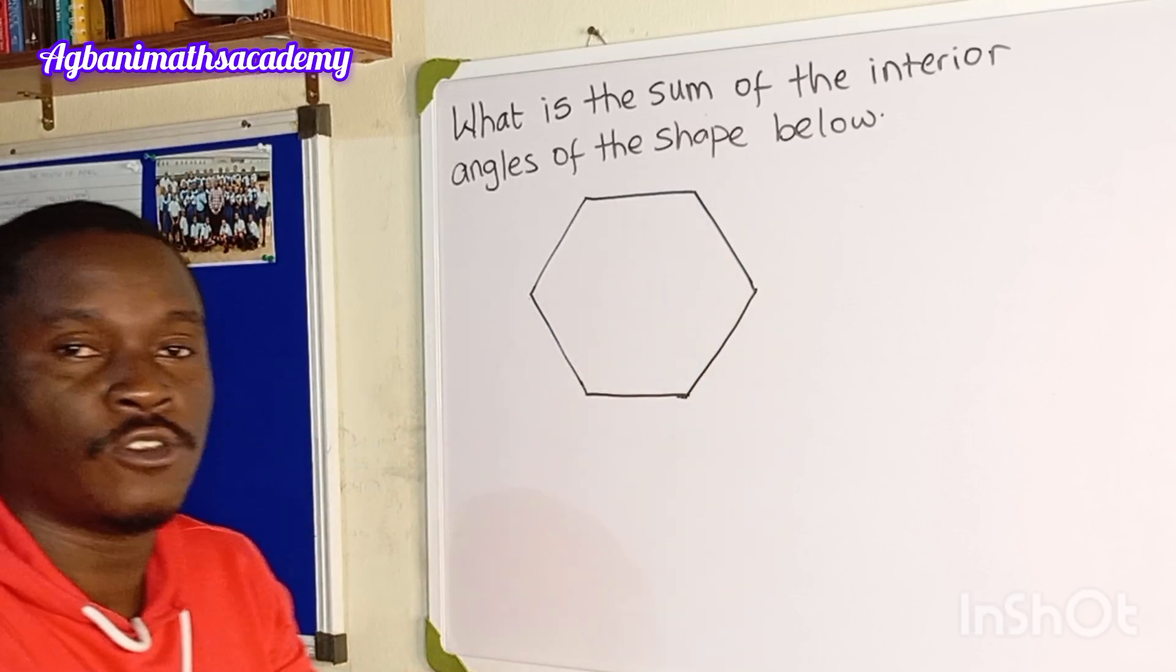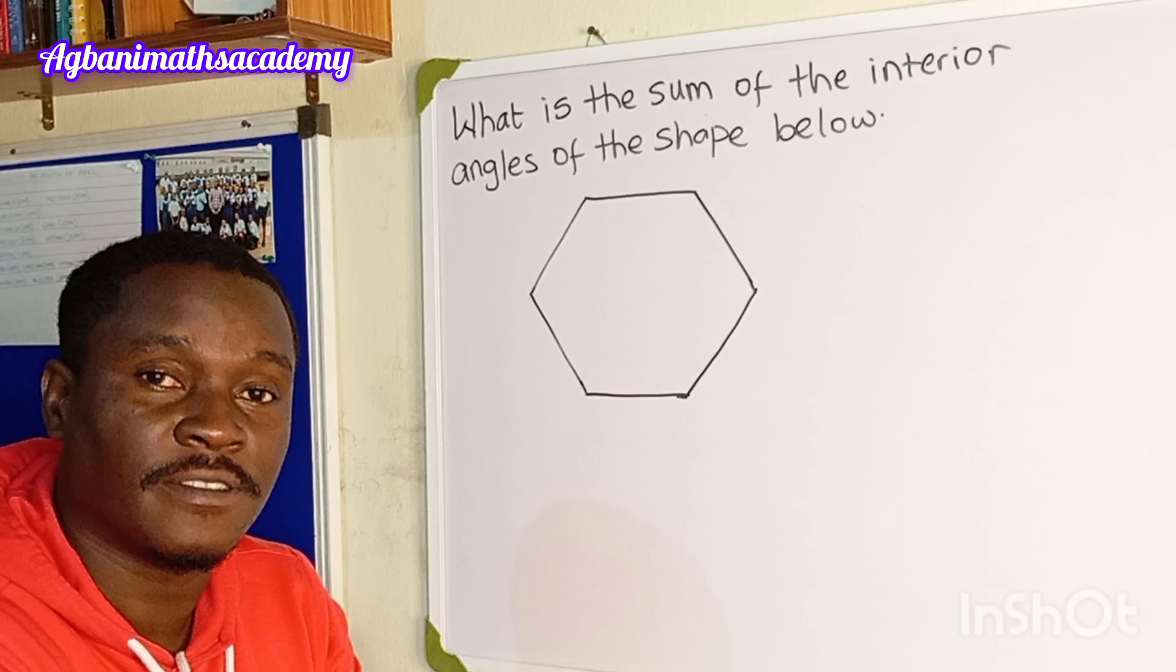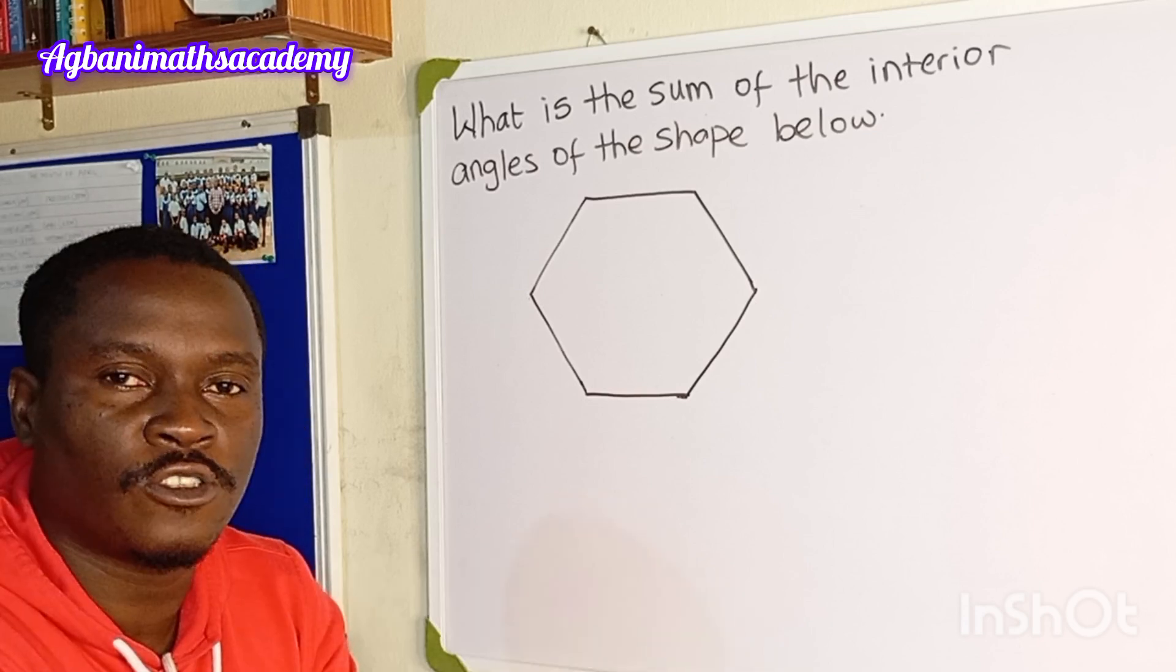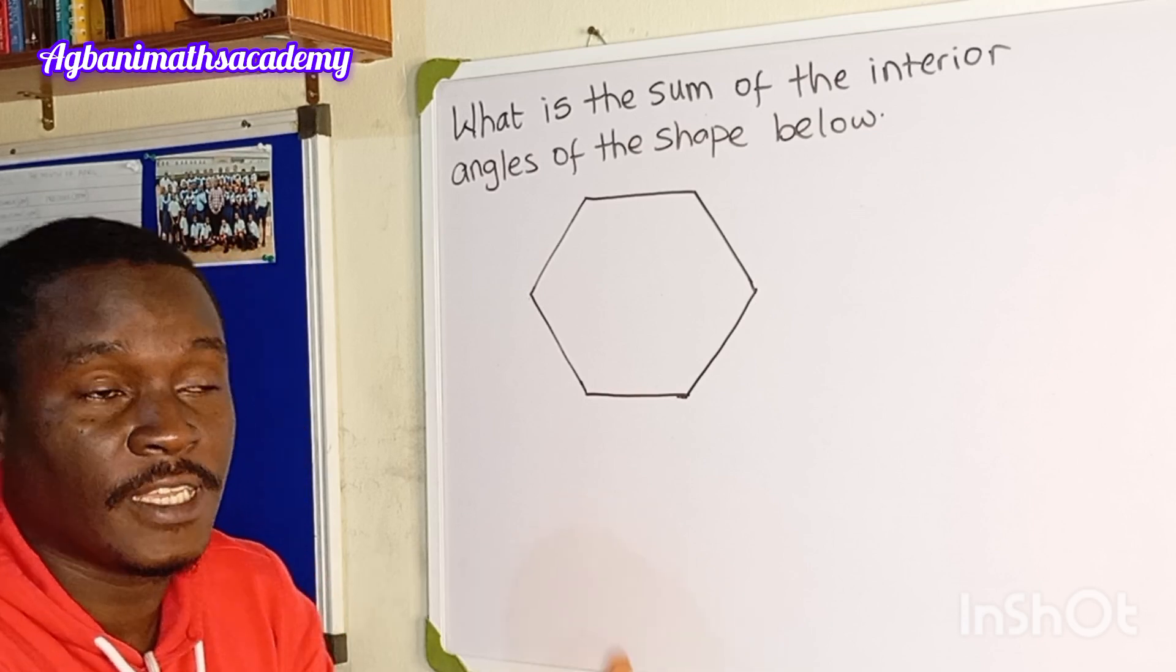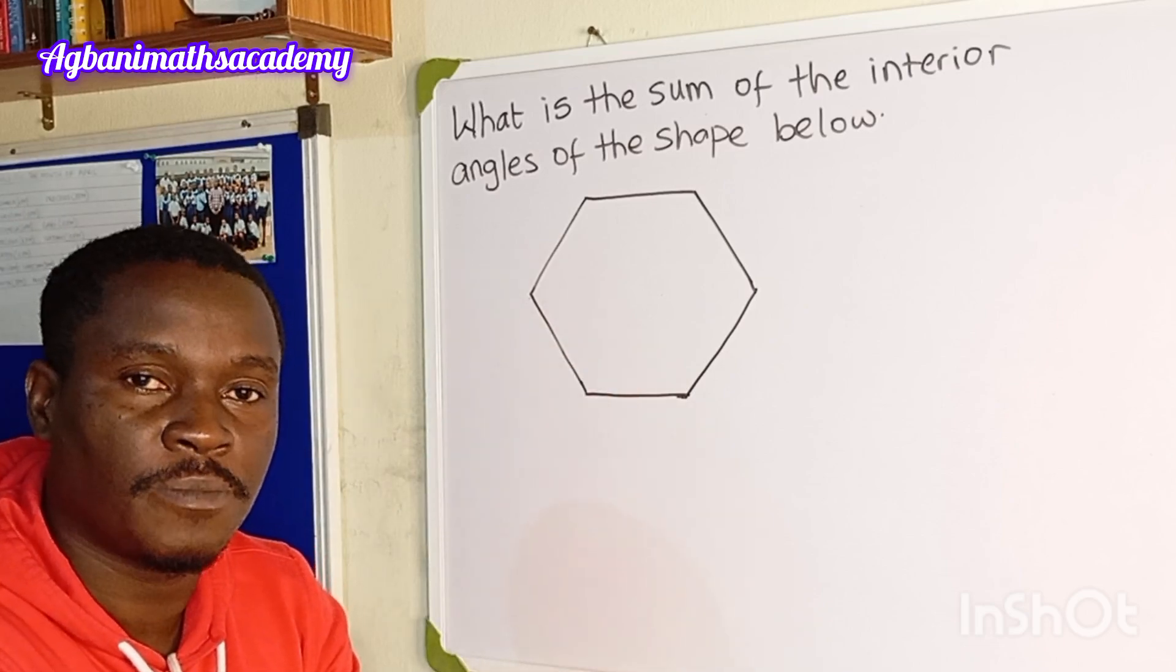So, for us to know the sum of the interior angles of the shape, we first need to identify the shape. So let's see. For us to be able to calculate the sum of angles in this particular shape, we need to identify what the shape is.